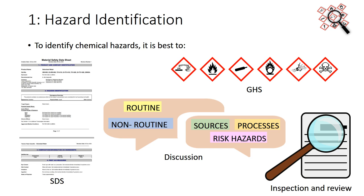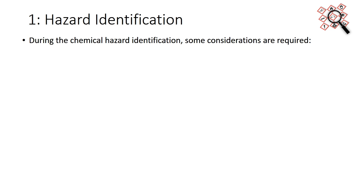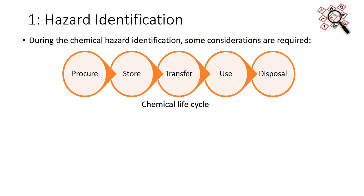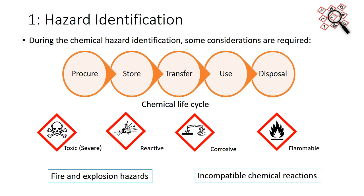Review past incidents or injury records. During chemical hazard identification, some key considerations are required: the chemical life cycle, possible exposure to toxic, reactive, corrosive, or flammable chemicals, fire and explosion hazards, and incompatible chemical reactions.